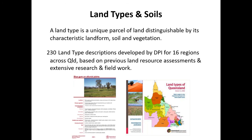Land types are unique parcels of land distinguished by associated landform, soil and vegetation types. DAF have developed over 230 land-type descriptions across 16 regions in Queensland, based on previous land resource assessment information, extensive research and field work. They're pretty extensive in their descriptions of landform, vegetation communities, expected pasture composition, soil types, and land use recommendations, and they've been developed to help land holders identify areas at the paddock and property scale that differ in their capability and limitations, and provide practical information on how to manage them.